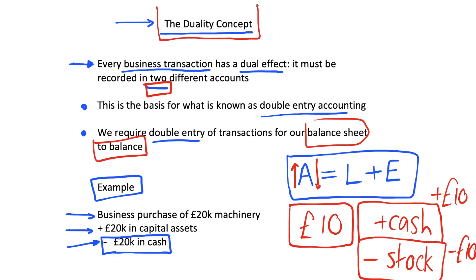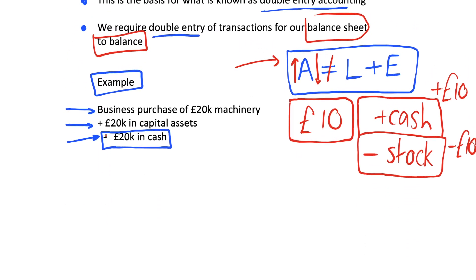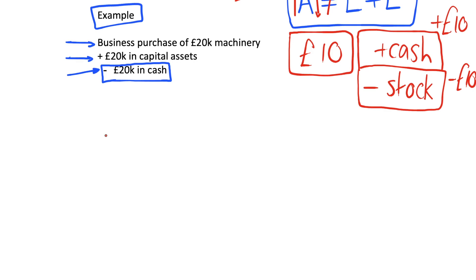That's the duality concept — every entry has to be recorded twice. Using the accounting equation helps us understand why: if our balance sheet is balancing to begin with and we change one thing, the equation no longer holds, so we have to change two things such that it still balances. That's the duality concept, or double entry accounting. If this was useful, please drop a like, check out the accounting playlist for more concepts, and subscribe.